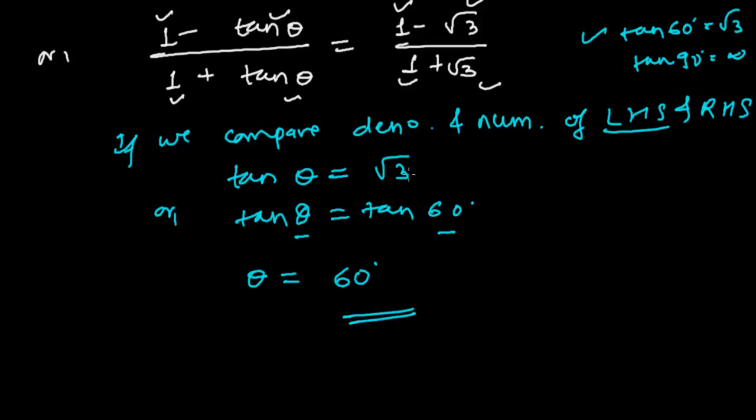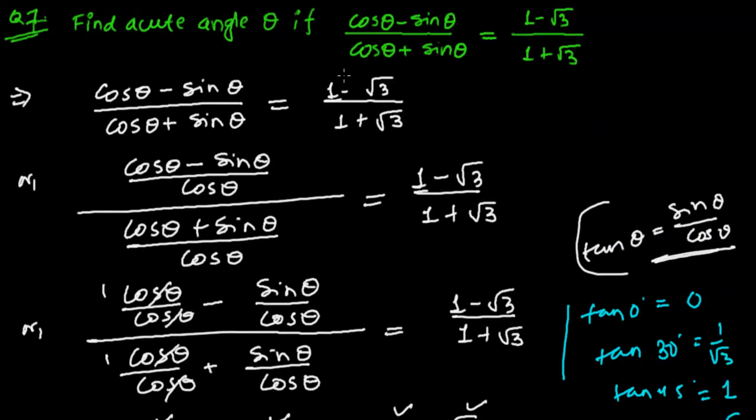See here, what we have done. Actually simply we divided this numerator and denominator by any one. Either by cos or sin, you can divide. In such kinds of problems generally we divide by any one of this, either by cos θ or sin θ. If there was any cosec θ or cot θ or anything, maybe tan or cot, we can choose any one and we have to divide these all.